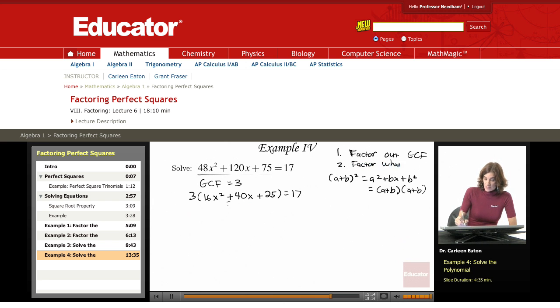Factor what is left, meaning what is left behind after pulling out the greatest common factor. And this is going to come out to, this is my a squared. The square root of that is 4x. This is b squared. The square root of 25 is 5.